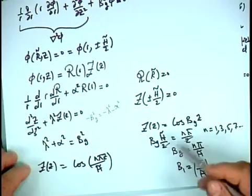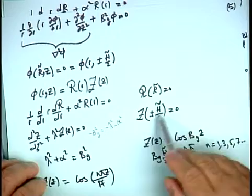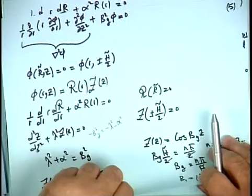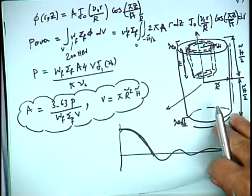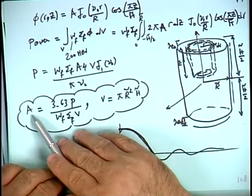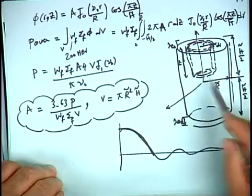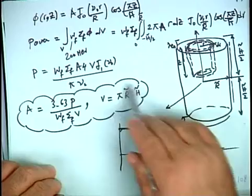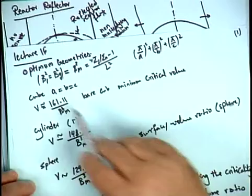The axial buckling component was (π / H̃), where H̃ is the extrapolated height. We also said last time that we can calculate the constant in front of the flux function by calculating the power of the reactor, which depends on the reactor volume. If you integrate, you find a formula for that constant.